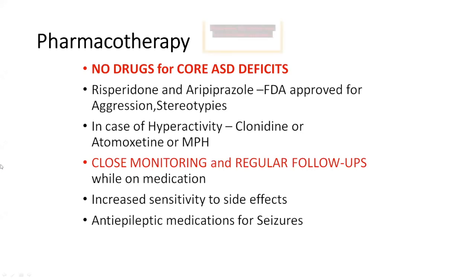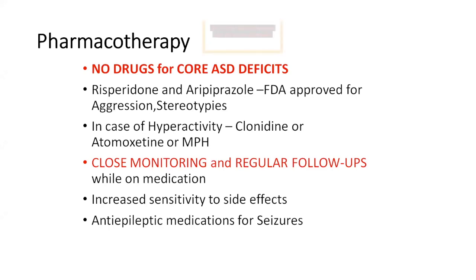Pharmacotherapy is not recommended for the core deficits of autism — social communication deficits and RRBs are not tackled effectively with medication. However, if you have a child who is aggressive and has a lot of stereotypies, you may want to use a low dose of an atypical antipsychotic like risperidone or aripiprazole. If there is a comorbid disorder of ADHD, you may consider medications like clonidine, atomoxetine, or methylphenidate. Children are more susceptible to side effects of medication than adults, so very close monitoring and regular follow-ups are necessary.